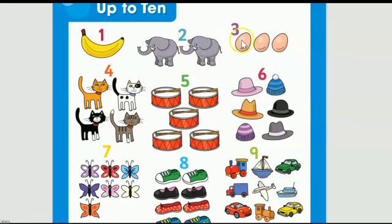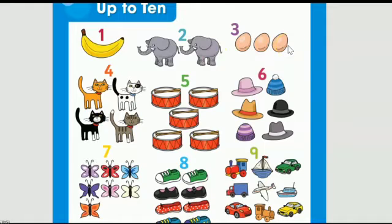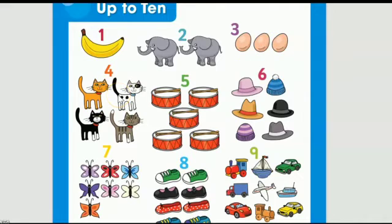How many eggs are here? Let's count: one, two, three — there are three eggs. Very good! We have written three here. Count with me: one, two, three. Now, how many cats are there? Count again: one, two, three, four.